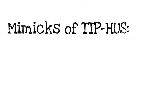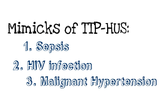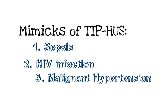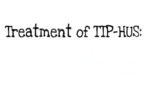There are also mimics of TTP and HUS. One would be sepsis, so severe infections can cause this. Two, HIV infection can lead to similar symptoms. And three, malignant hypertension, because you can get a microangiopathic hemolytic anemia with that as well.